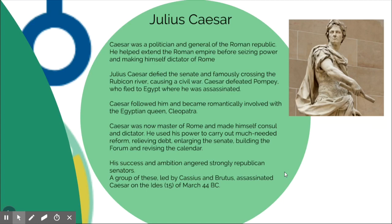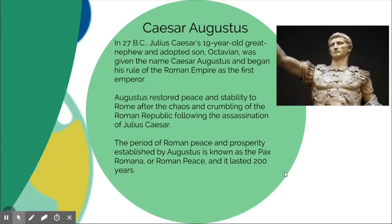Caesar made himself consul and dictator, which didn't make a lot of people happy. He did do great things: he relieved debt, made the Senate bigger, built the Roman Forum, and revised the calendar — that's why we have July, among other months. His success angered many people, and on the Ides of March — the 15th of March, 44 BC — he was famously stabbed. Caesar Augustus was his nephew and was eventually given that name.